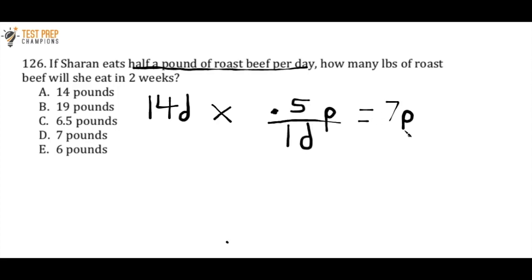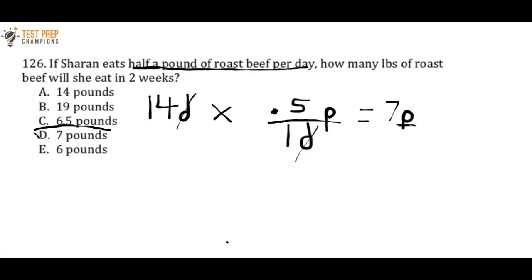If you're confused about how exactly I knew to do that calculation, I set it up so that the days cancel out. We have 14 days divided by one day down here, and those units cancel out. When I do 14 times 0.5, my answer is left in pounds. So if you ever have a question like this and you're not sure how to set up the calculation, try to set it up like this so that you end up with an answer in pounds — see how the Ds cancel out here.